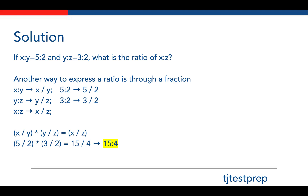Another way to express a ratio is through a fraction. You can say x to y is the same thing as x over y, or the ratio of 5 to 2 is 5 over 2. You can do this for all of the ratios presented: x to y is x over y, y to z is y over z, x to z is x over z. Now if you see that x over y times y over z, you can see that that equals x over z, which is the ratio of x to z.